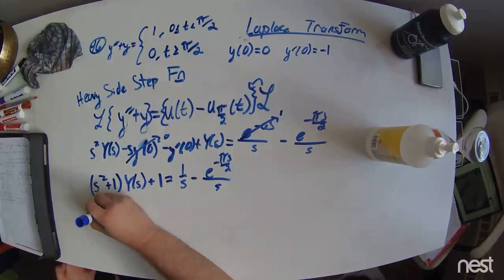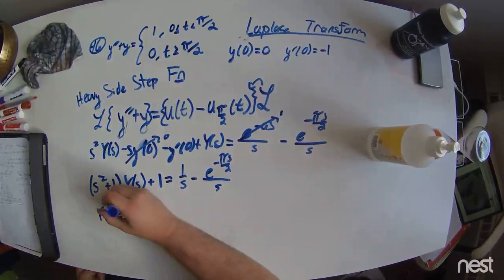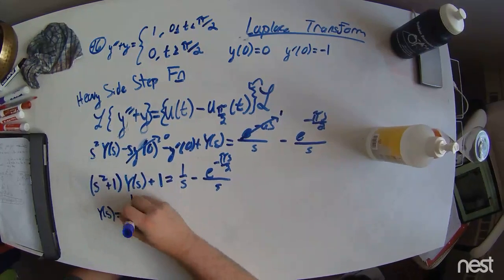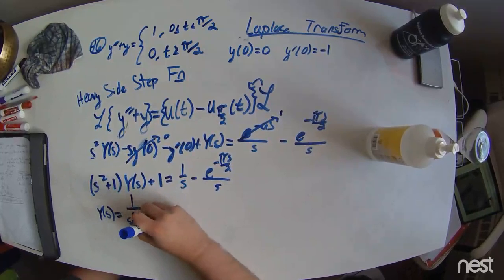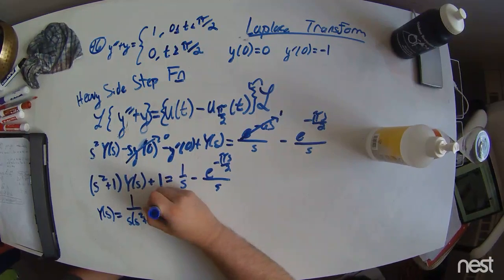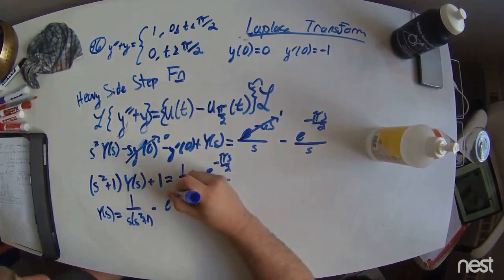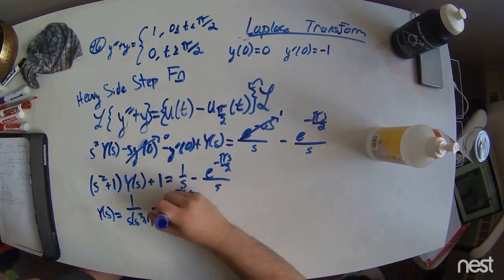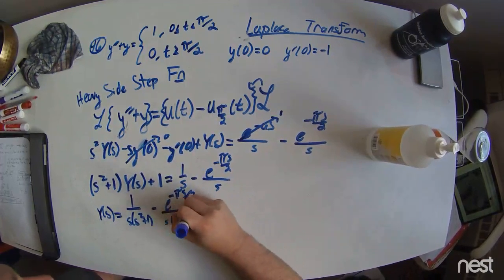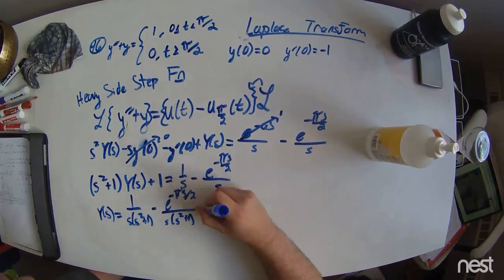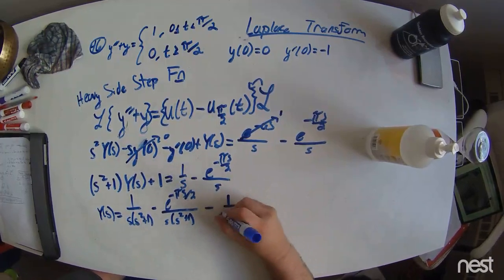We therefore now have y of s equal to 1 over s, s squared plus 1, minus e to the minus pi s over 2 over s, s squared plus 1, minus 1 over s squared plus 1.